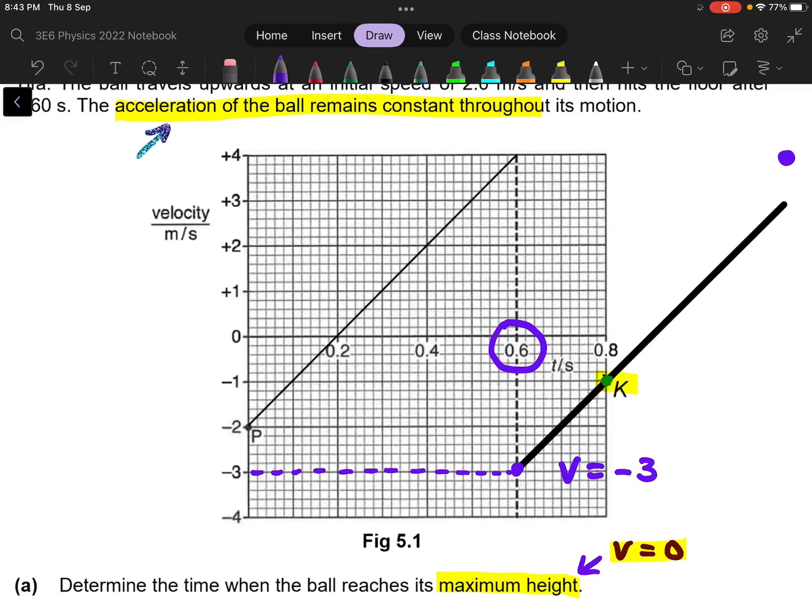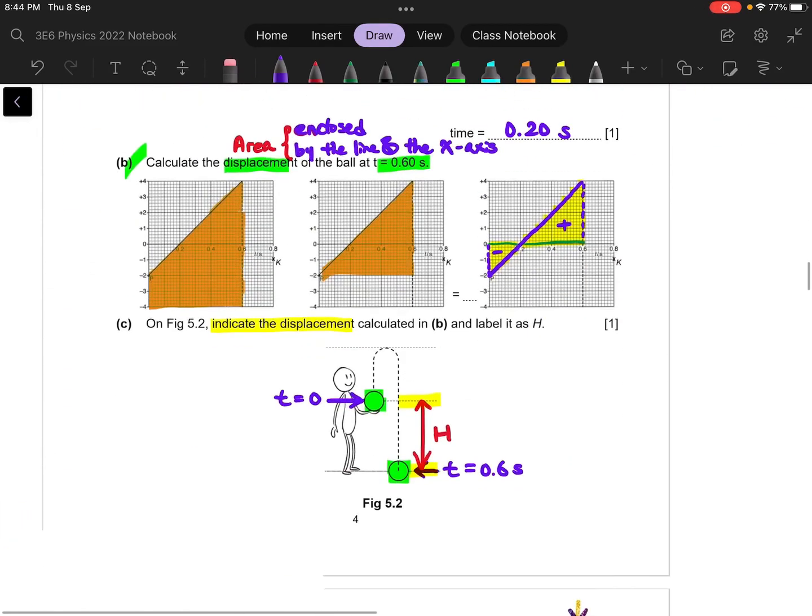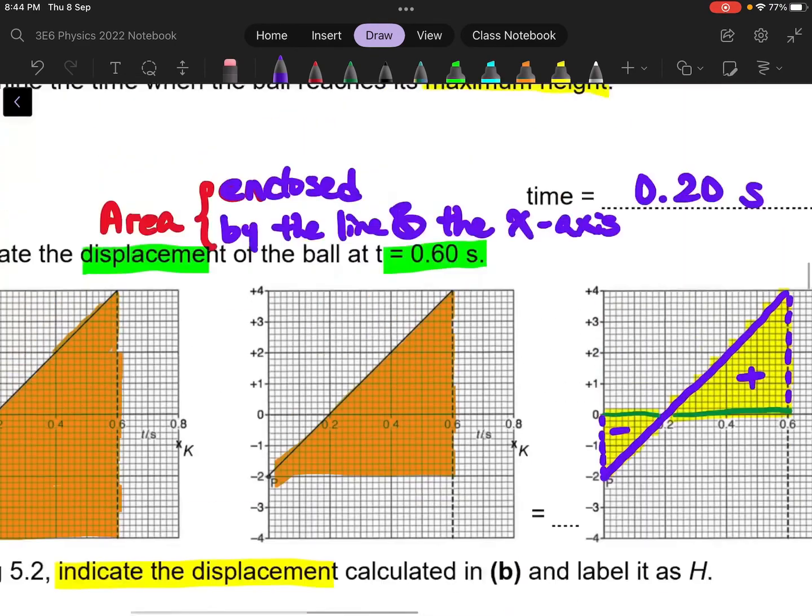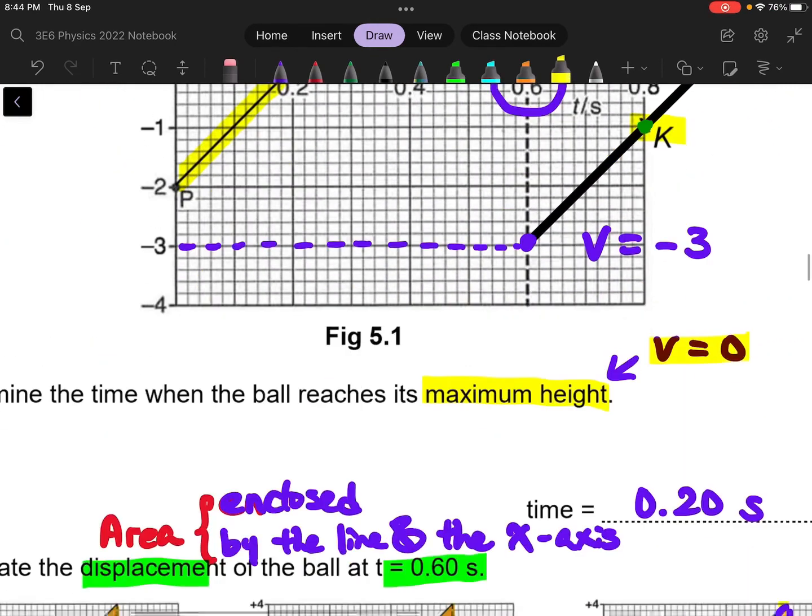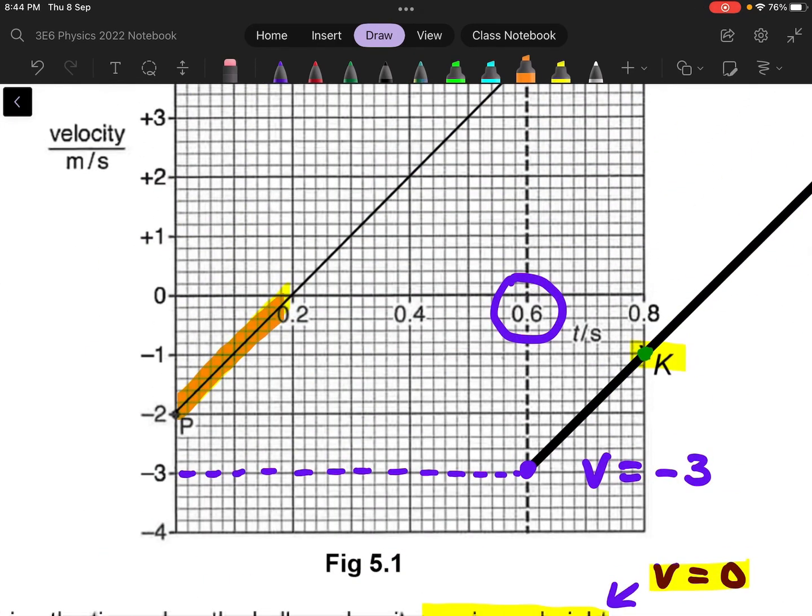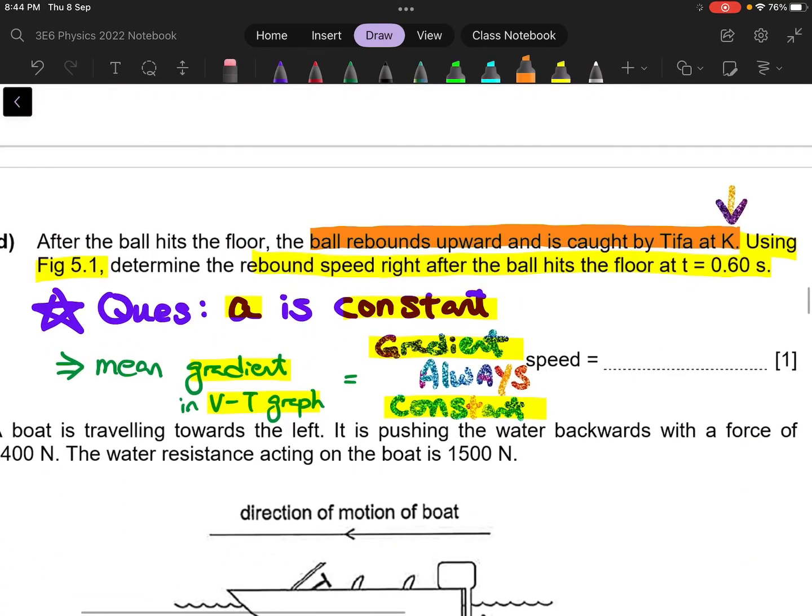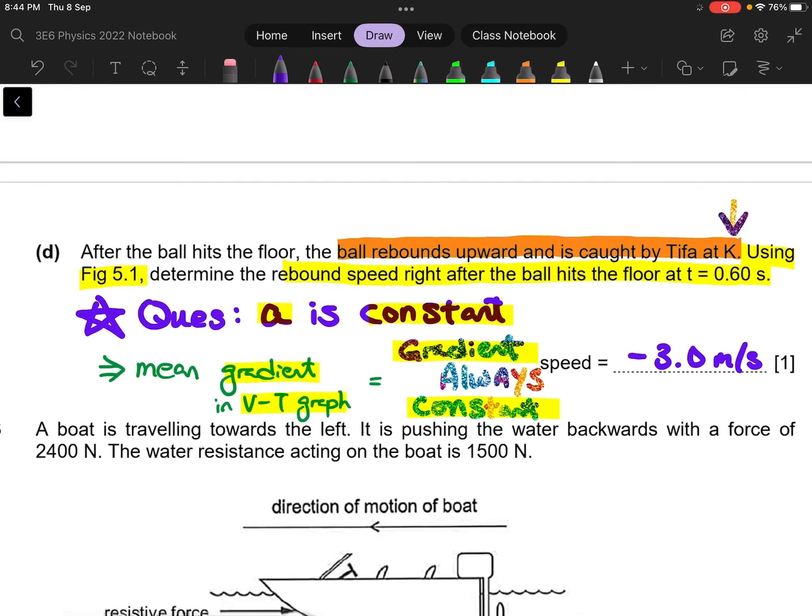And it agrees, because when it first being thrown up, this is the diagram given to us. So the ball is first thrown upwards. And you can see that when the ball is first thrown upwards, over here and over here, when the ball is first thrown upwards, you can see that it is in the negative zone. So when the ball rebound from the floor, it should also be in the negative zone. So that's how you determine the rebound velocity, by using the graph. So eventually you will actually get a speed of minus 3.0 meter per second.